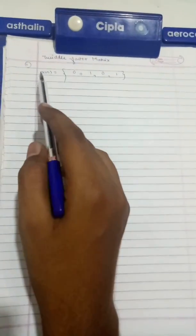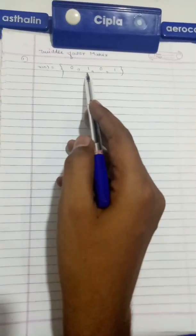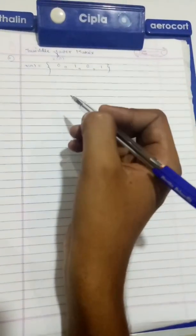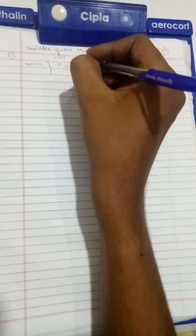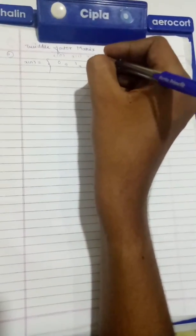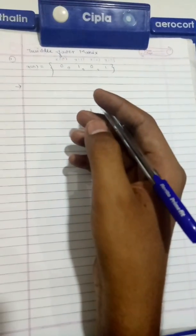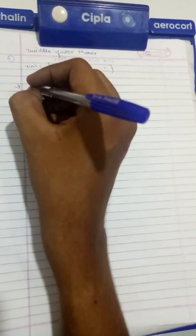Let us study and solve some problems on the twiddle factor matrix. In this question, X of n is given as 0, 1, 0, 1, and we have to find X of K by using the twiddle factor matrix. So X(0)=0, X(1)=1, X(2)=0, X(3)=1. To solve it using the twiddle factor matrix, we need to draw the twiddle factor matrix.